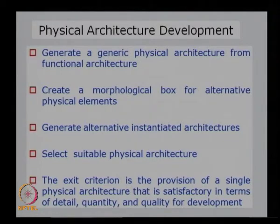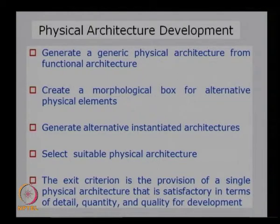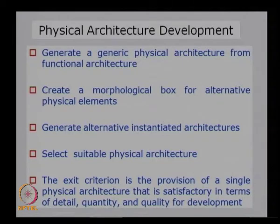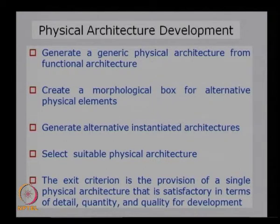The exit criterion — how we choose a physical architecture — is basically the provision of a single physical architecture that is satisfactory in terms of detail, quantity, and quality for development. We examine the many possible options in the instantiated physical architecture and determine whether each satisfies the development requirements in detail, quantity, and quality. Once satisfied, we choose that particular architecture.